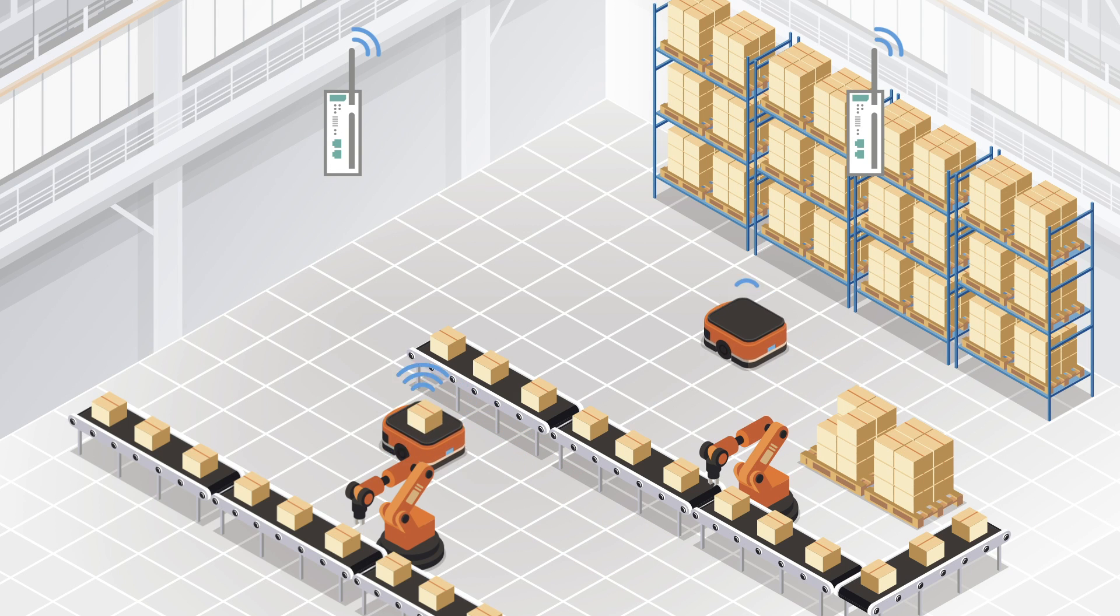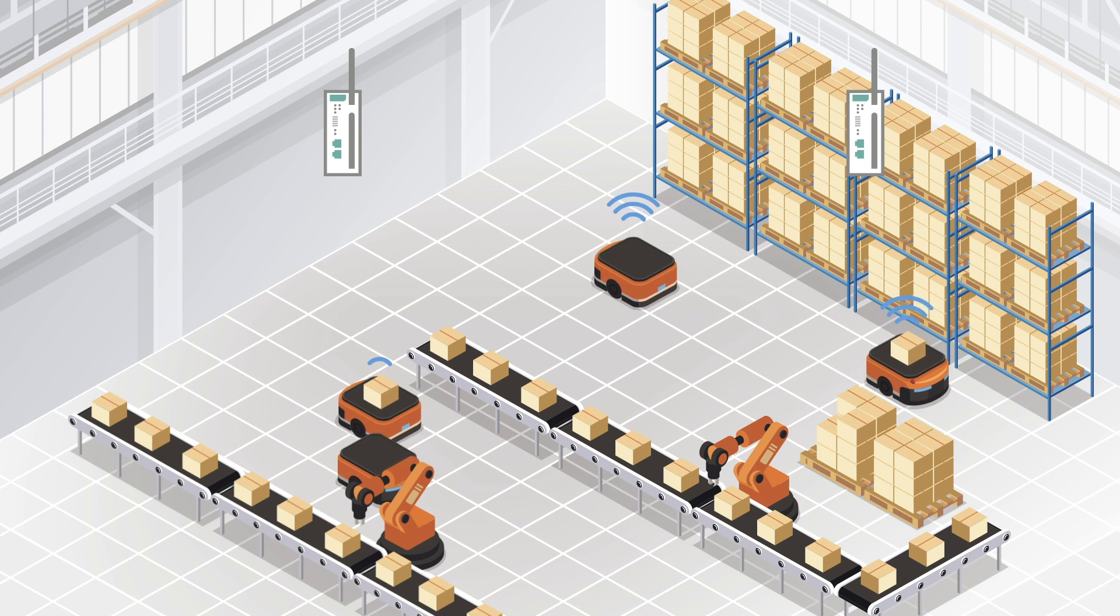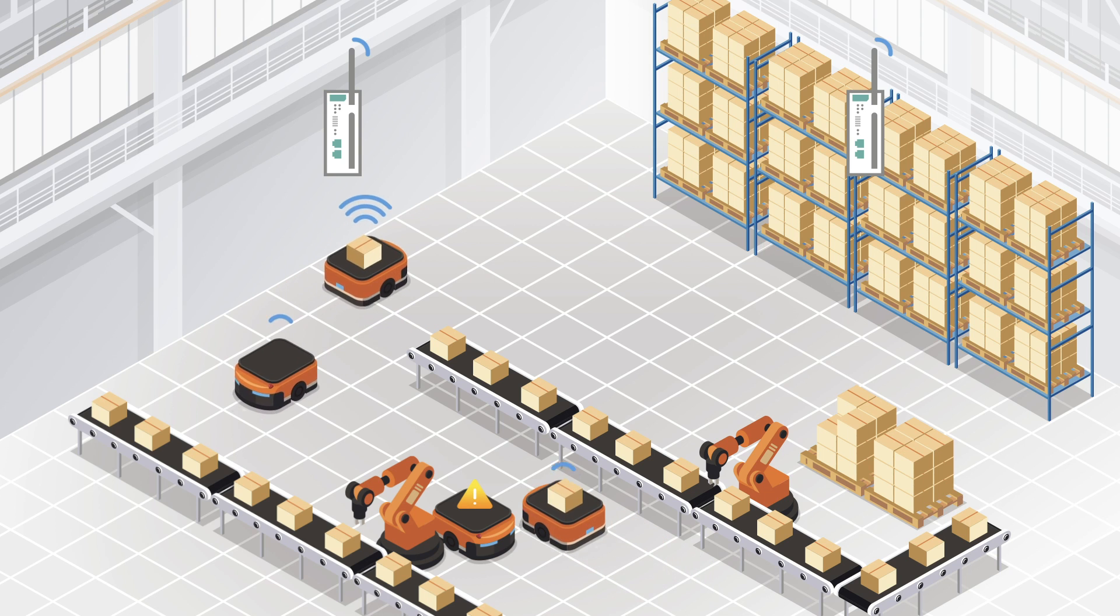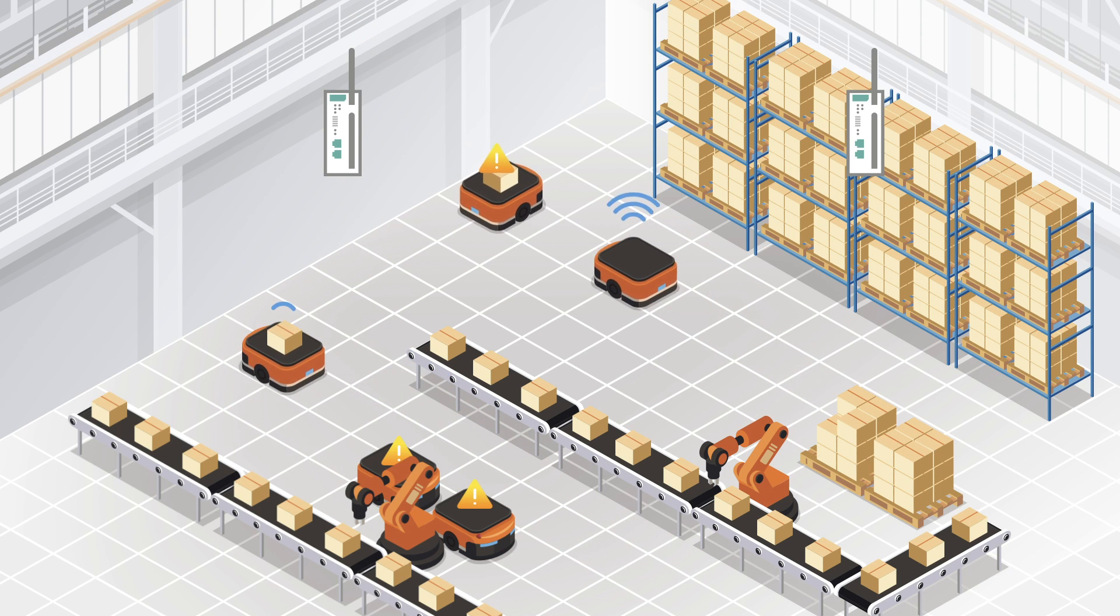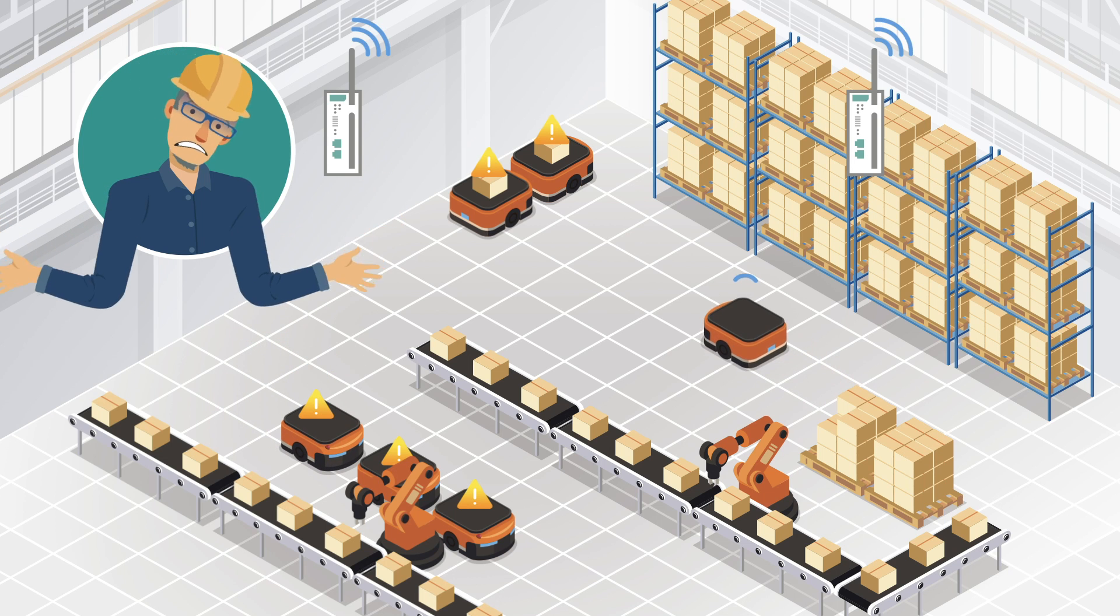AGV systems are considered mission-critical assets. An unstable wireless signal could easily disrupt the operation of the AGV. However, wireless connections are invisible and affected by a lot of different factors. This makes troubleshooting and managing these connections really difficult.